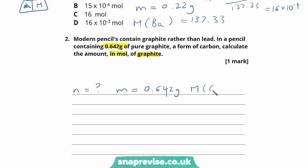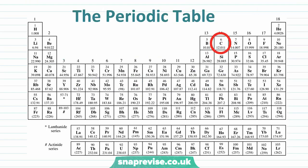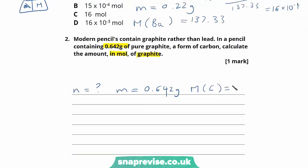And we can look in our periodic table to find the molar mass of carbon. If we look in our periodic table, we can see the molar mass of carbon is 12. So we can go ahead and write that into our calculation. So we can now use that triangle again. Number of moles, mass, molar mass. Again, we want to work out the number of moles. So we're using the number of moles is equal to the mass over the molar mass. The mass being 0.642 and the molar mass being 12. To give us the number of moles is 0.0535 moles.